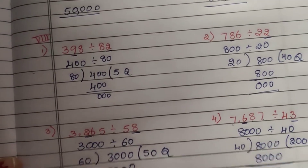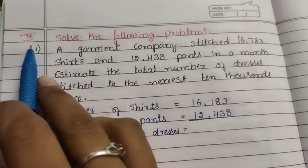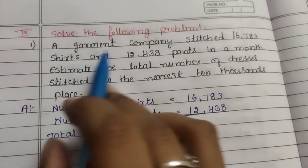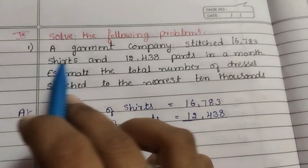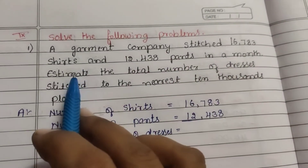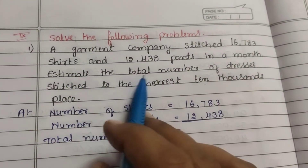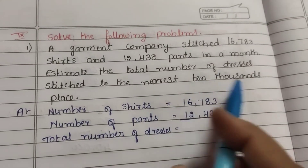Now try this on your own. 9th main: solve the following problems — working problems. 9th main, 1st question: A garment company stitched 16,783 shirts and 12,438 pants in a month. Estimate the total number of dresses stitched to the nearest 10,000s place.